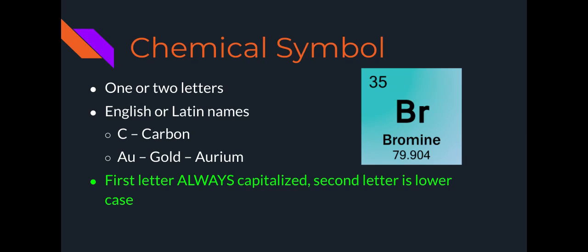An example of this is carbon. Carbon is the English, so we see a C. But we have gold, which is AU, which is actually named after the Latin name for gold, which is aureum. There's also other elements that have the Latin names, which includes lead, which is PP, mercury, which is HG, silver, which is AG, and copper, which is CU. So those are all named after the Latin names.